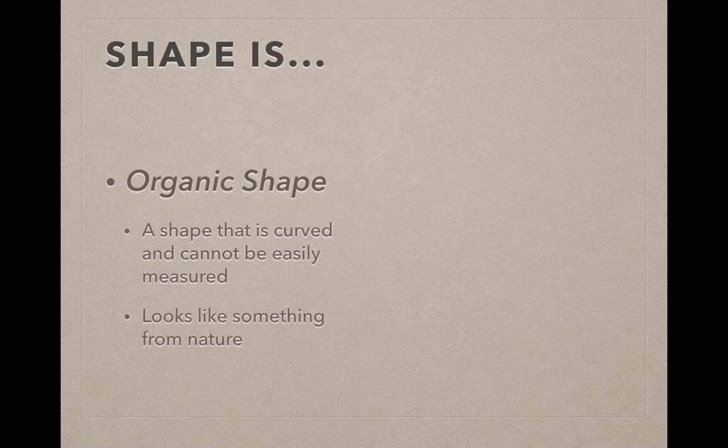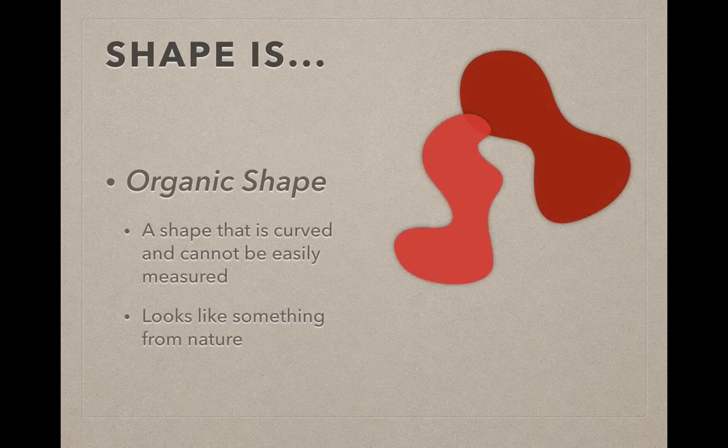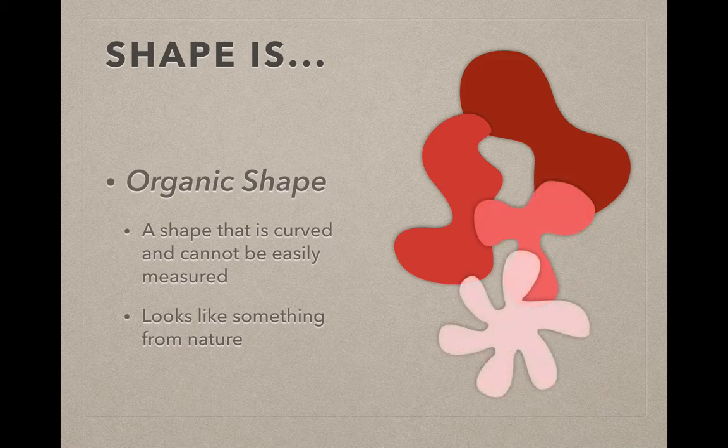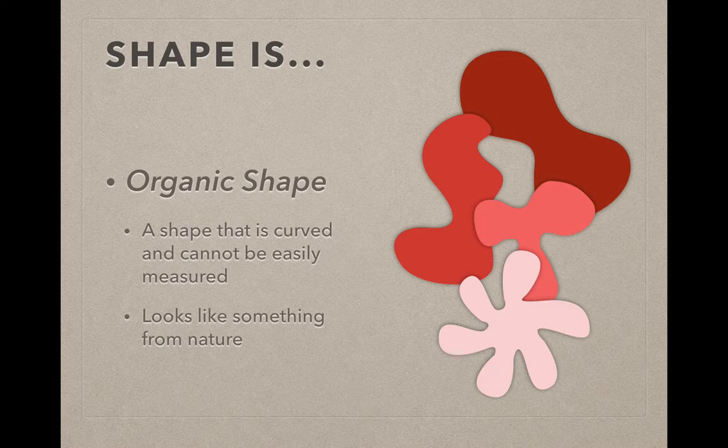Organic shapes are shapes that are curved and cannot easily be measured. It looks like something from nature. An easy way to describe it would be blobby or curvy. Those terms go well with organic shape.